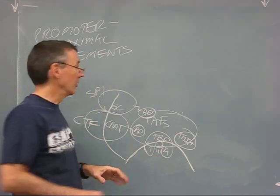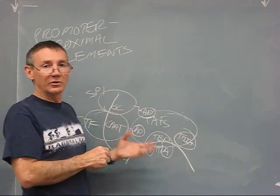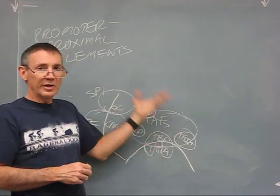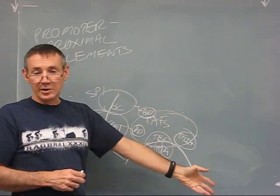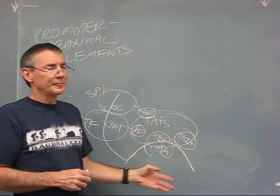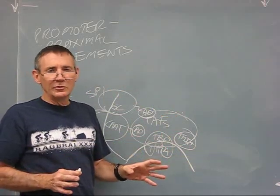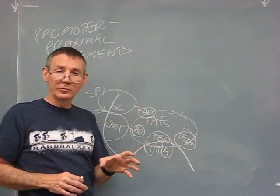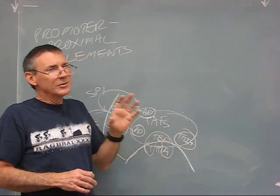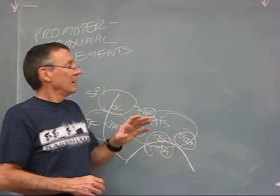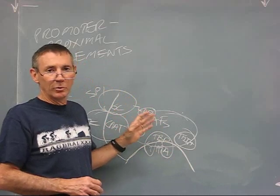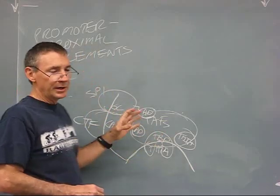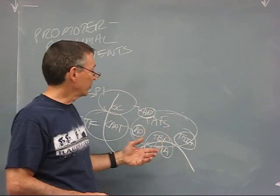In addition to these promoter proximal elements, there can also be DNA sequences that are much further away. And we refer to these as enhancer elements. Enhancer elements can be thousands of base pairs away. They can be upstream, they can be downstream, they can be located almost anywhere. As a loose approximation, we can say that binding of an activator to an enhancer element is going to stimulate transcription at the nearest TATA box. This is not quite exactly true. There's some influence of chromatin structure, the availability of the TATA box, and so on. But as a first approximation, let's say that binding of the activator to the enhancer element stimulates transcription at the nearest TATA box.